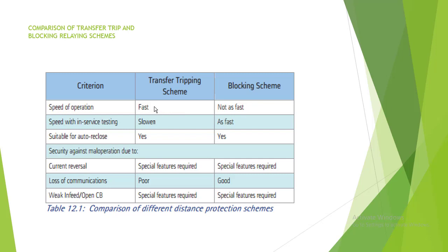In the transfer tripping scheme, as soon as the signal is received, the tripping is released — so these are faster. For service testing, the blocking scheme is slow while the transfer tripping scheme is fast. Both schemes are suitable for auto recloser.